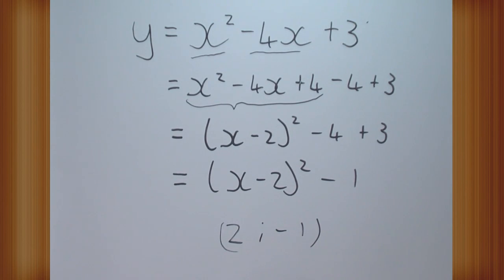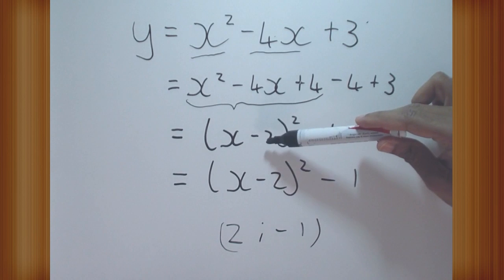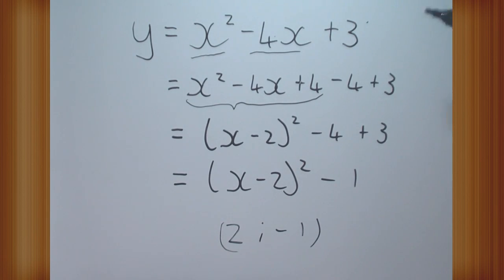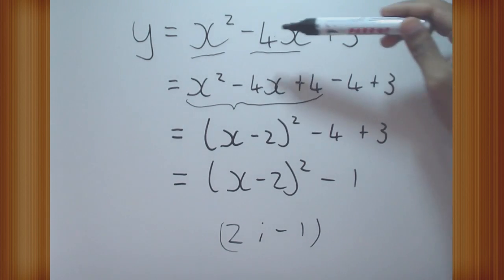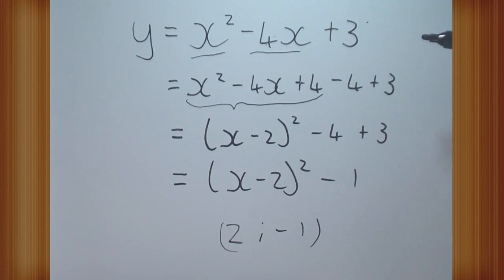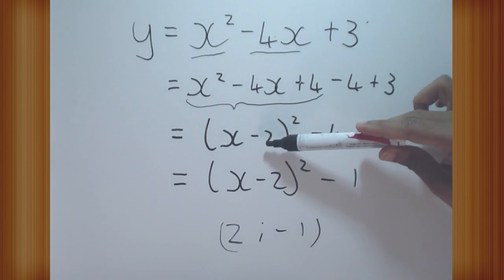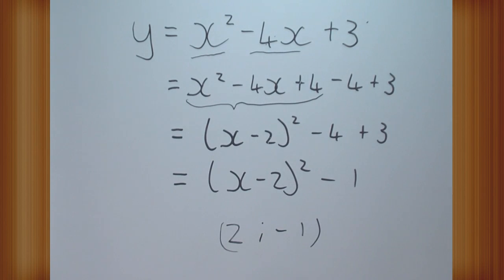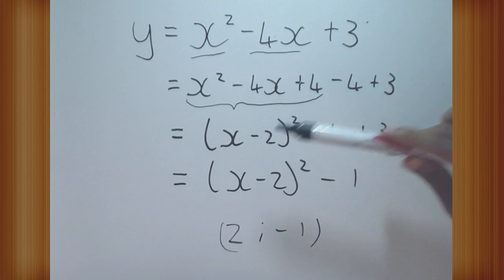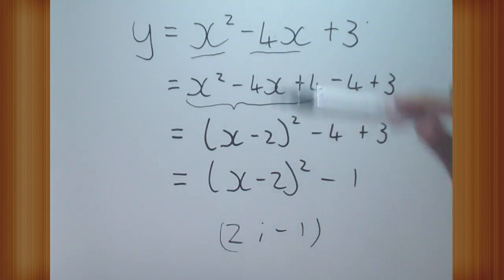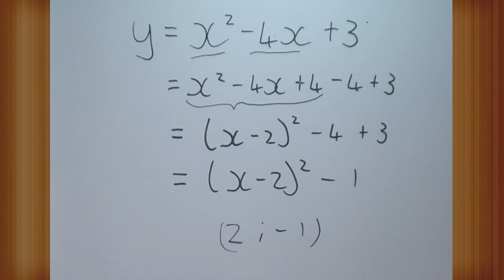Some things to note: the middle coefficient, when divided by 2, gives the number inside the bracket. The number subtracted on the outside is not the same as the middle coefficient — it's the middle coefficient divided by 2, then squared. In this example that number happens to be the same, but that won't always be the case. The number on the outside is this number squared, and this number is half of the middle coefficient. If you follow all the steps as explained, you will get the right answer.